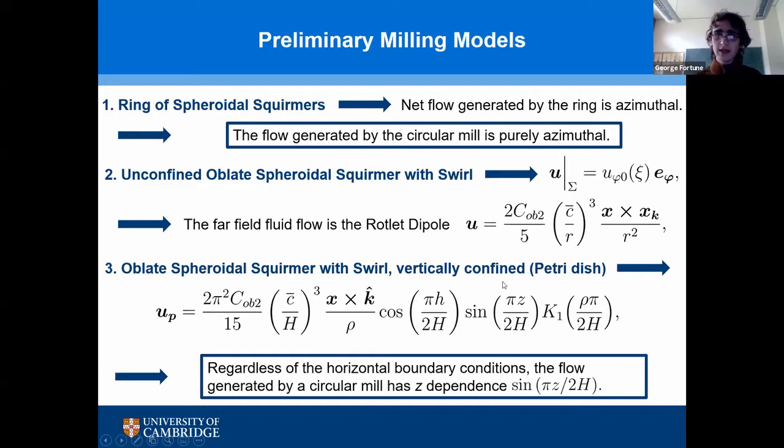Regardless of what horizontal boundary conditions we impose, the flow will have a z-dependence of the form sin(πz/2h). As a quick sanity check: when z = 0, this sine term is 0, which is what we'd expect from no-slip; when z = h, the derivative of sine is cosine and cos(π/2) = 0, which satisfies the free-surface boundary condition.